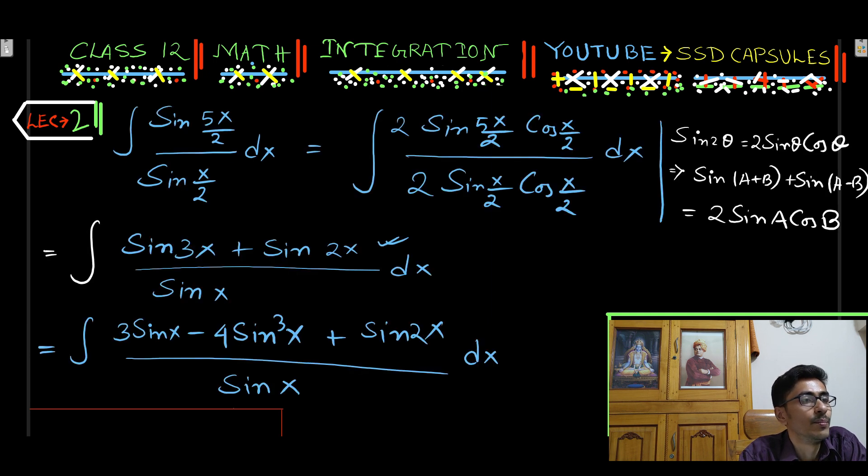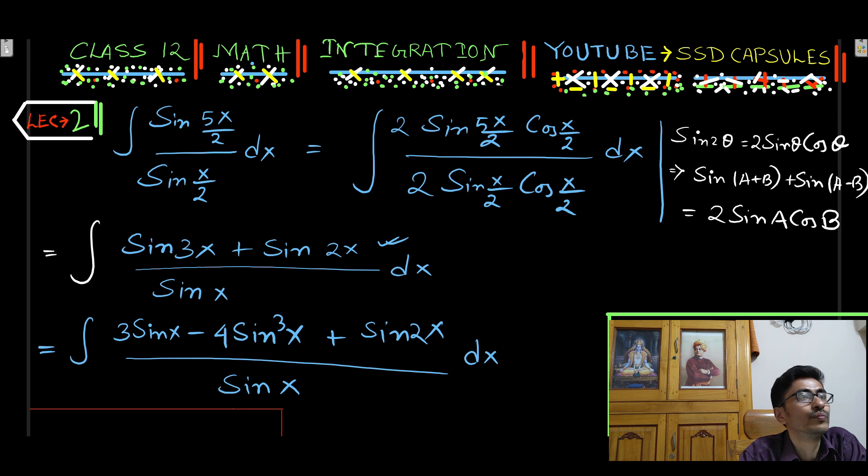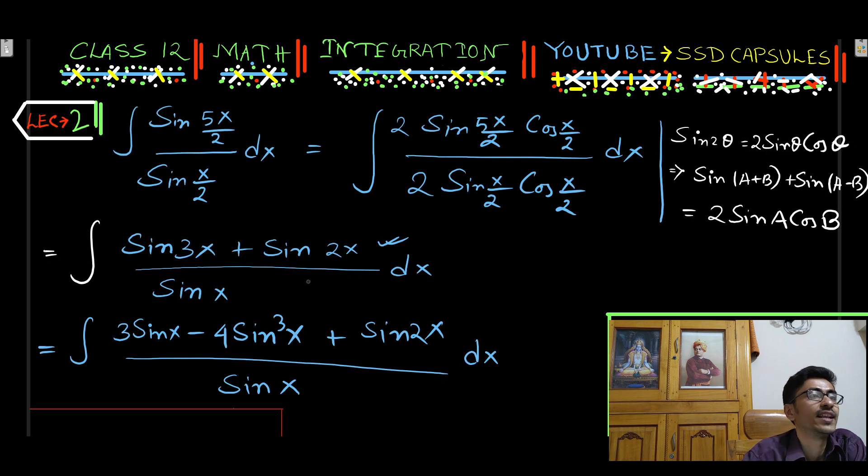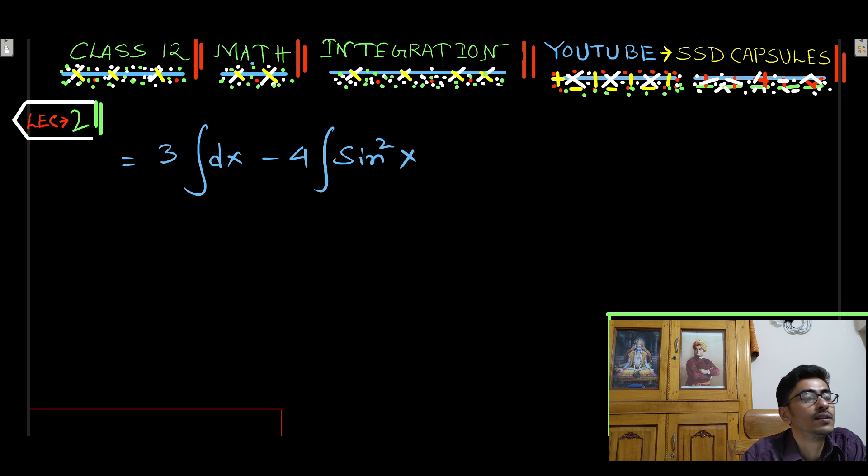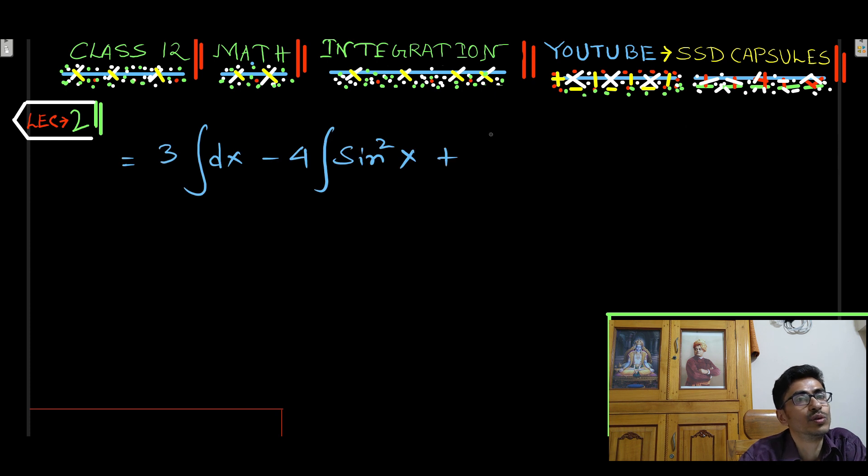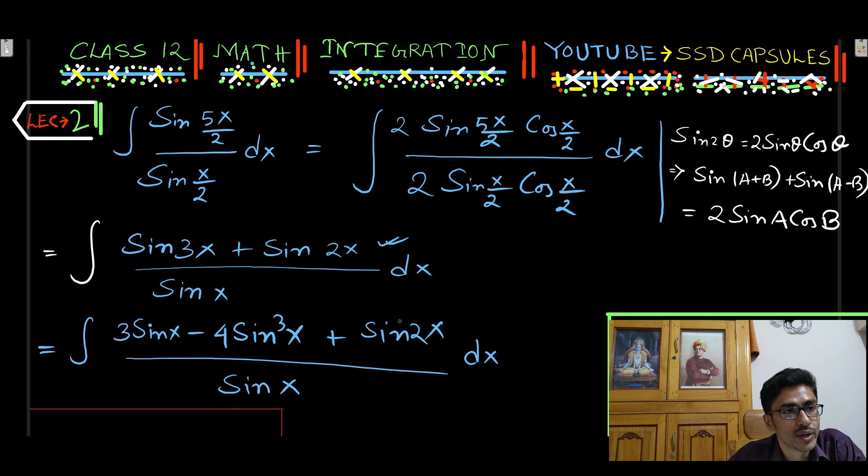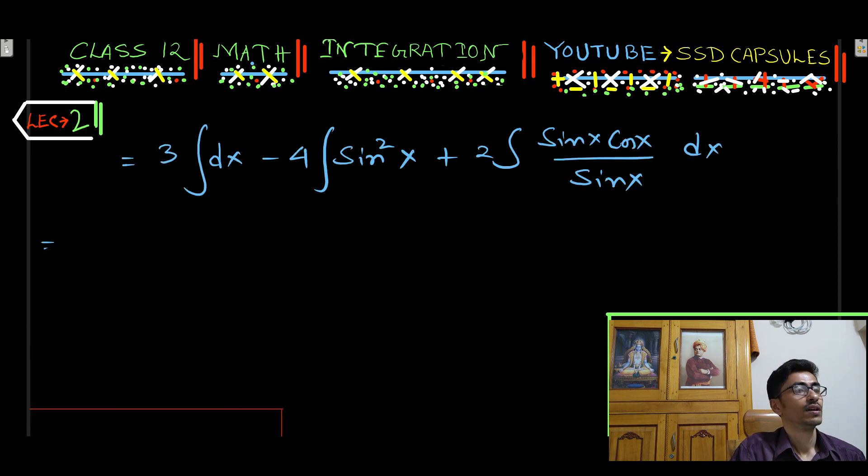Minus 4 sine cube x by sine x, so 2 sine x. Plus sine 2x by sine x: 2 sine x cos x by sine x dx. Here again we have used the formula of sine 2x equal to 2 sine x cos x.